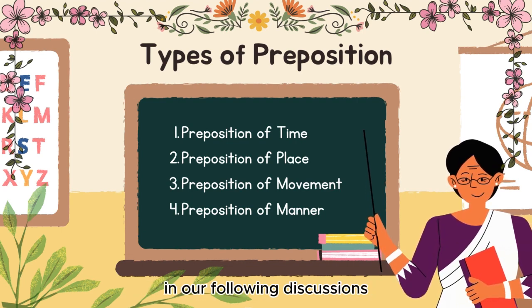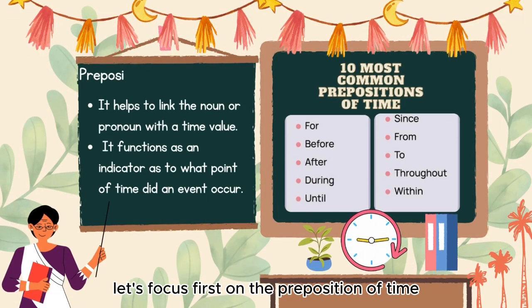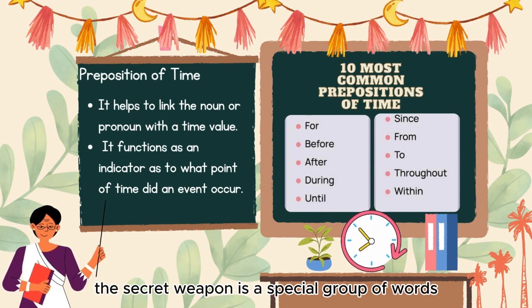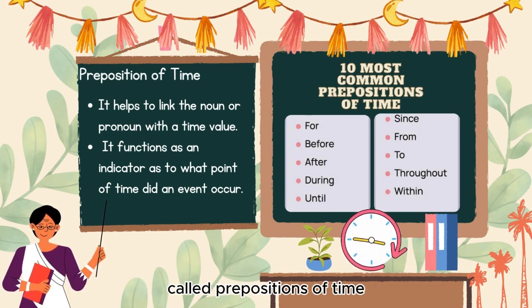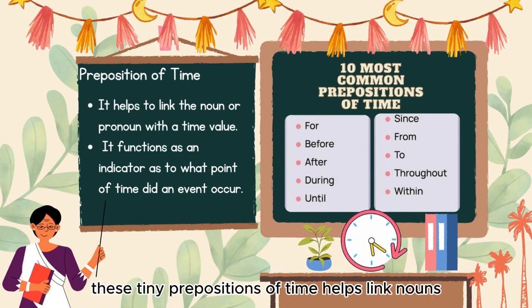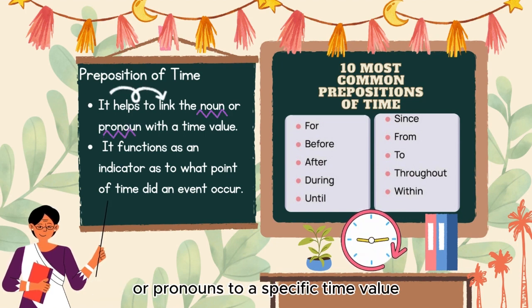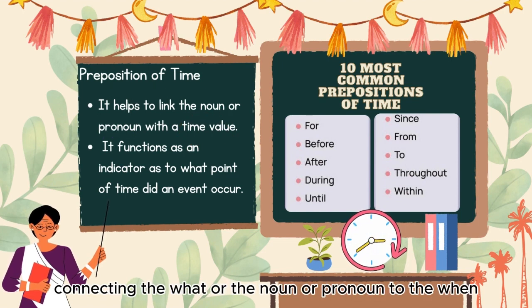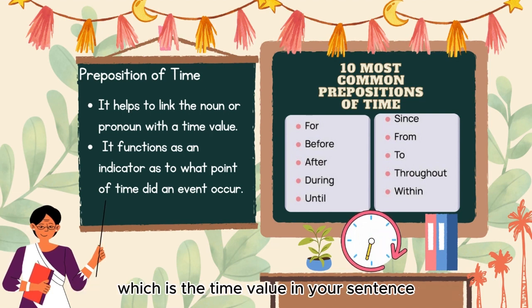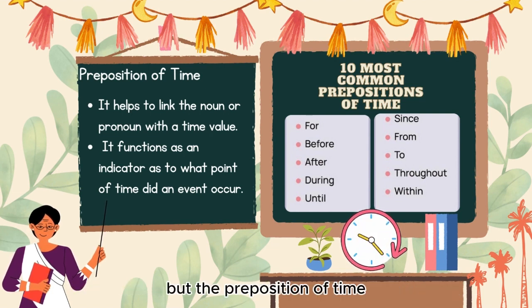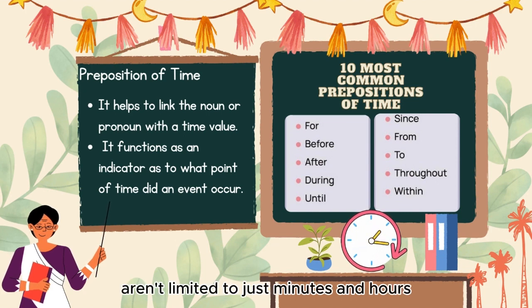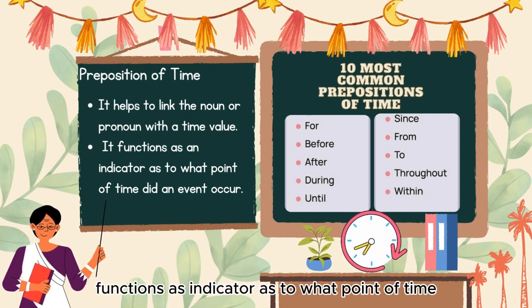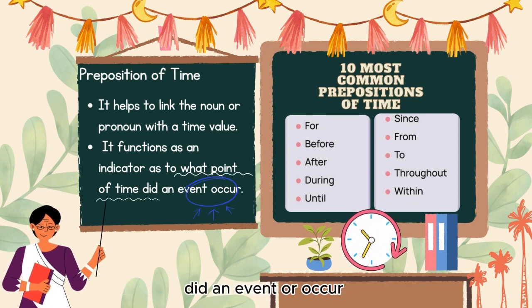Let's focus first on the preposition of time. Have you ever wondered how we talk about when things happen? The secret weapon is a special group of words called prepositions of time. These tiny prepositions help link nouns or pronouns with specific time values — like little bridges connecting the 'what' (the noun or pronoun) to the 'when' (the time value) in your sentence. Prepositions of time also function as indicators of at what point in time an event occurred.